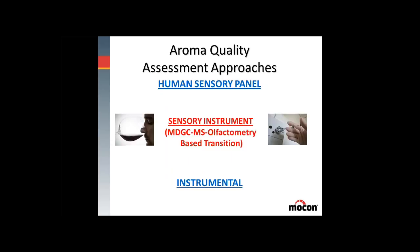By combining the olfactory component with the multidimensional gas chromatography mass spectrometry technique, a sensory instrument is created that is a bridge between the two approaches. The human sensory portion — the olfactory — can direct the critical instrument correlations necessary to identify the offending compounds. In short, this methodology can be summed up as sensory-directed odor or aroma analysis.